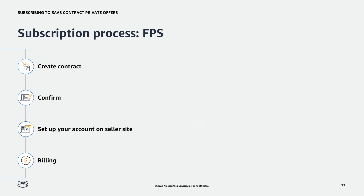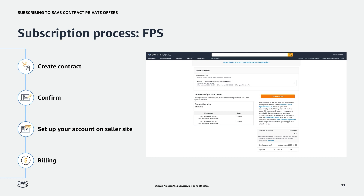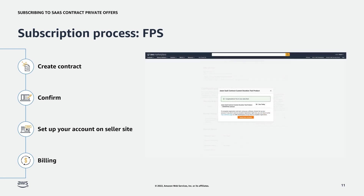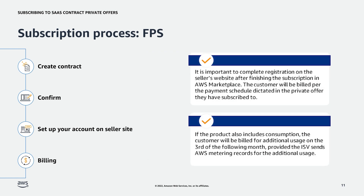Now let's go over the process for creating a custom payment schedule for SaaS Contract Private Offer subscriptions. First, the customer will sign in to the AWS account they want to use to subscribe to the private offer. Then they'll navigate to the private offer. From there, they will review the pricing and payment schedule. Finally, they'll choose Create Contract. A confirmation page will open indicating a successful subscription, and the customer will be prompted to set up their account. As with SaaS Contract Private Offer upfront purchases, AWS does not provision SaaS products to buyers. It is important to complete registration on the seller's website after finishing the subscription in AWS Marketplace. The customer will be billed per the payment schedule dictated in the private offer they have subscribed to. If the product also includes consumption, the customer will be billed for additional usage on the third of the following month, provided the ISV sends AWS metering records for the additional usage.